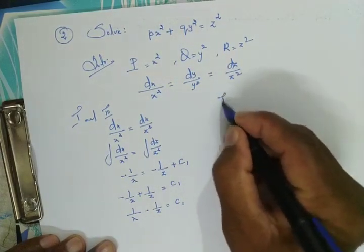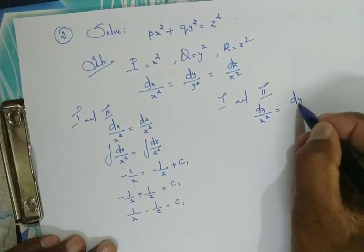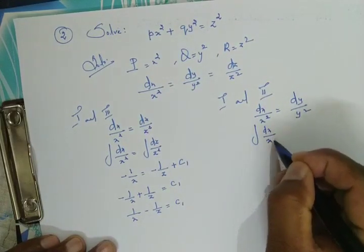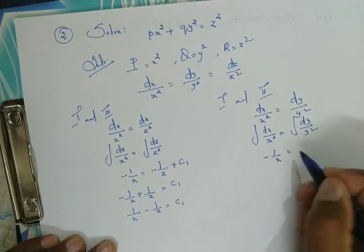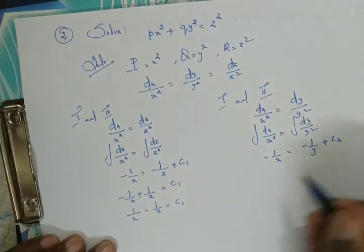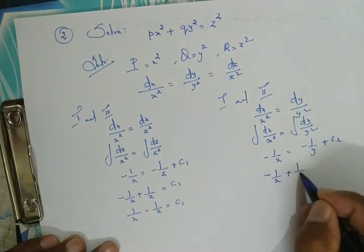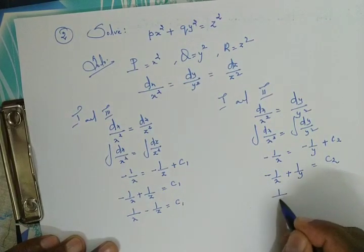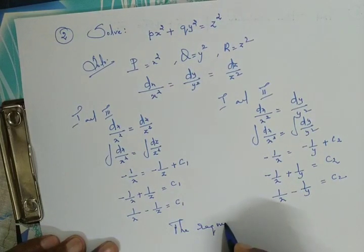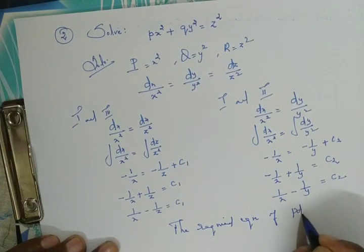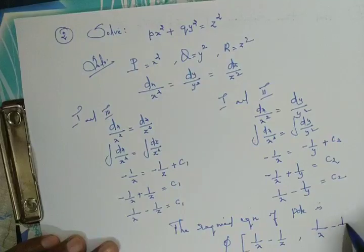Now considering the first and second fractions: dx/x² = dy/y². Integrating both sides, −1/x = −1/y + c₂. Cancelling the minus from both sides gives 1/x − 1/y = c₂. Therefore, the required equation of the PDE is φ(1/x − 1/z, 1/x − 1/y) = 0.